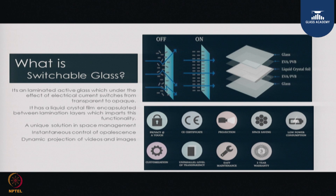Looking at this picture, it explains how the technology works. In the off situation, the glass is sandwiched across almost 4 surfaces: one glass on top, then a PVB or EVA layer, laminated with a liquid crystal foil, then another EVA and PVB layer, and then another glass. When switched on, the ions get aligned and you are able to see from inside to outside. When switched off, the ions move in random directions and an opaque condition is created.